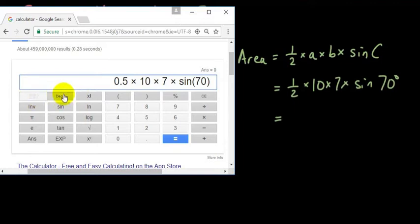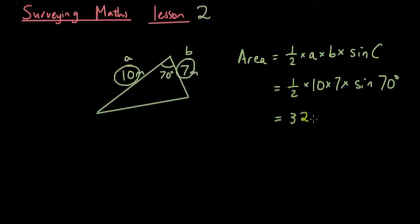If it doesn't say degrees, then you're doing it with the wrong answer. So then the answer is 32.89, round it to 2 decimal places, meters squared. 32.89 meters squared is the answer for that.